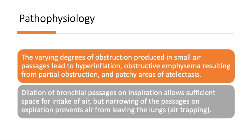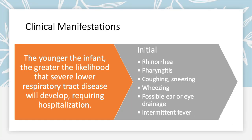Just like we saw in our asthma or CF patients, patients who have edema, inflammation, and mucus in their airways can experience obstruction of their airways, poor aeration of the lungs past the mucus, and hyperinflation. The younger the child who has bronchiolitis, the greater the likelihood that severe disease will occur — simply because they have smaller airways. Initially in bronchiolitis you'll see viral symptoms such as a runny nose, coughing, and sneezing. Wheezing doesn't mean this child has asthma — it just means there's turbulent flow going past those areas of mucus and obstruction.